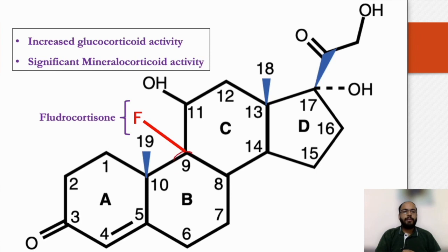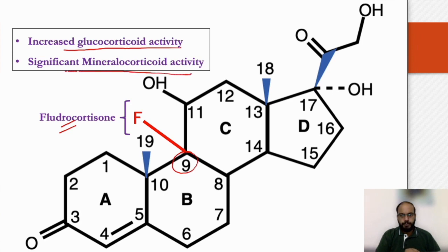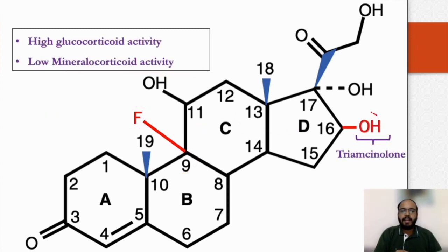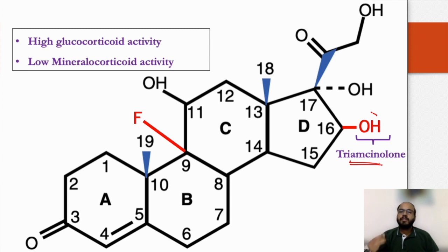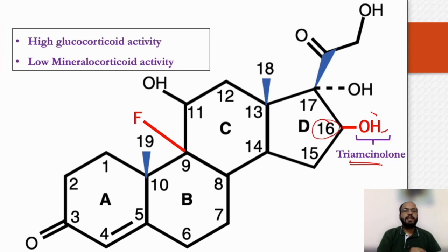Addition of a fluorine group at the 9th position leads to fludrocortisone, which increases glucocorticoid activity with significant mineralocorticoid activity as well. If a methyl group is attached at the 16th position, it forms triamcinolone — the steroid we routinely use for intradermal injections. This addition of a hydroxyl molecule at the 16th position further increases glucocorticoid activity and decreases mineralocorticoid activity.